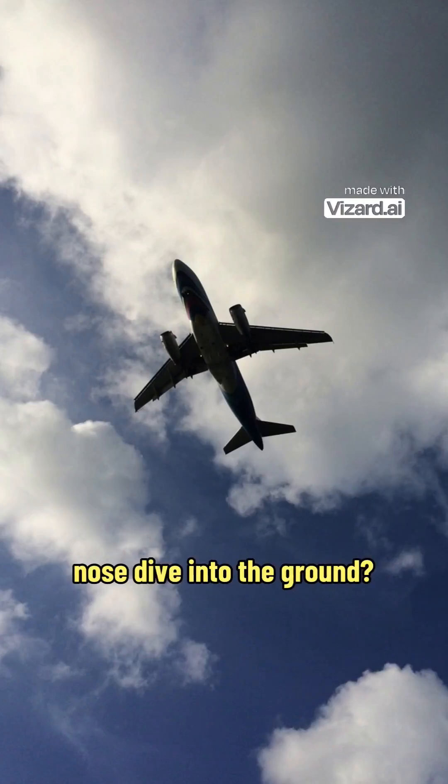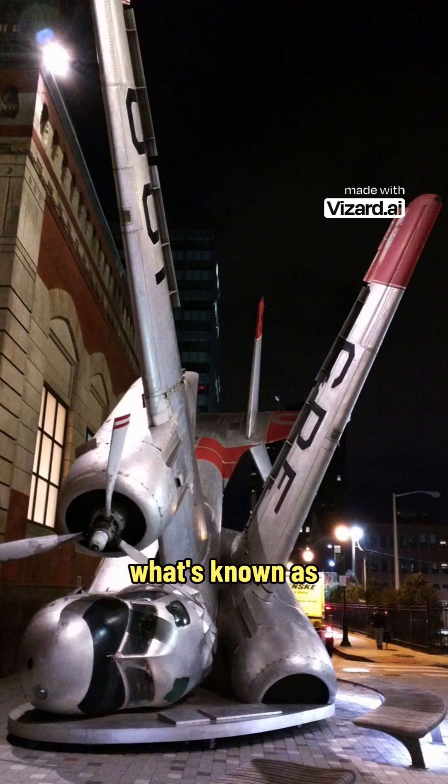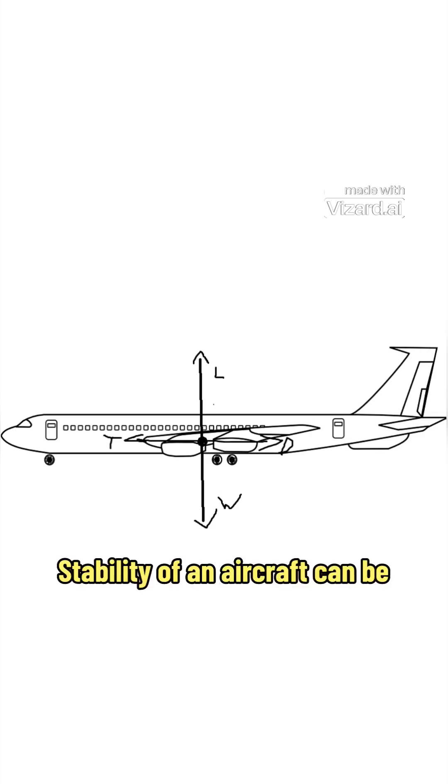Have you ever wondered why aircraft don't just constantly nosedive into the ground? That's because they have what's known as longitudinal stability. Stability of an aircraft can be defined as the ability to return to or maintain its previous flight path if disturbed.